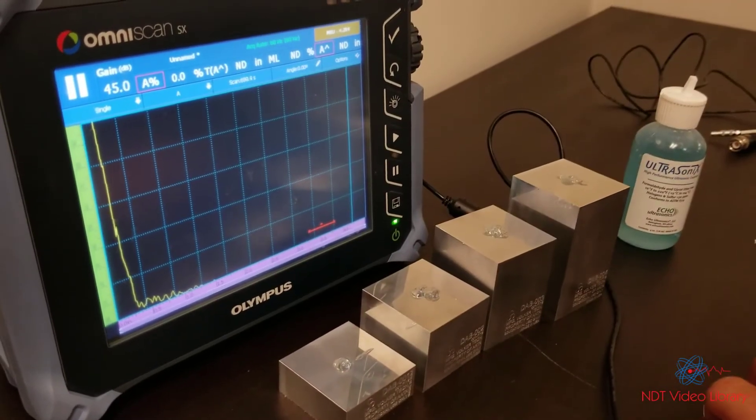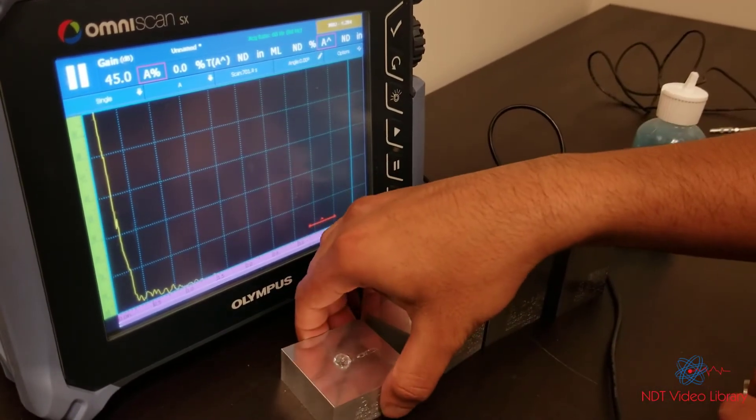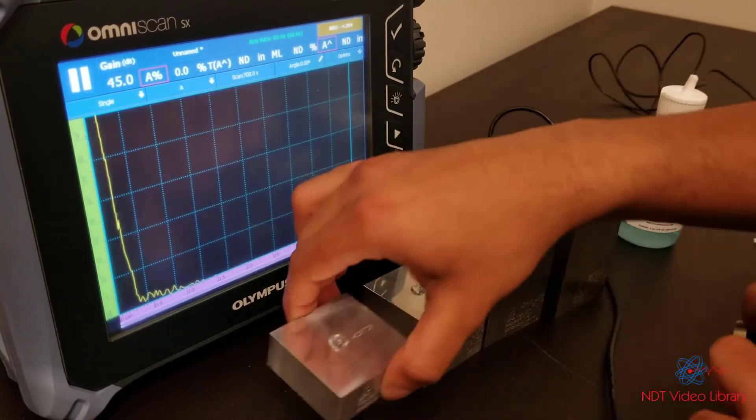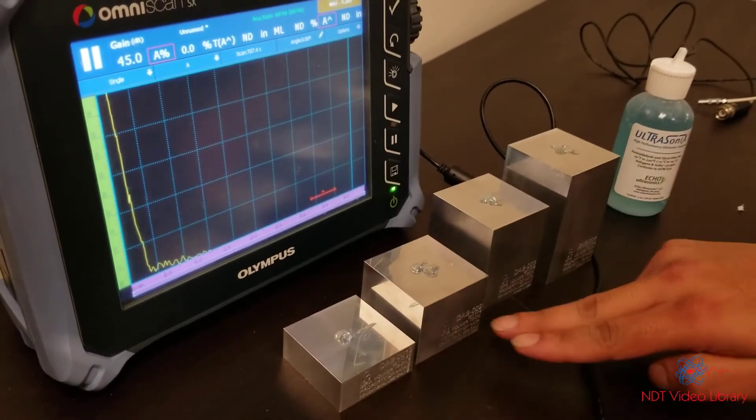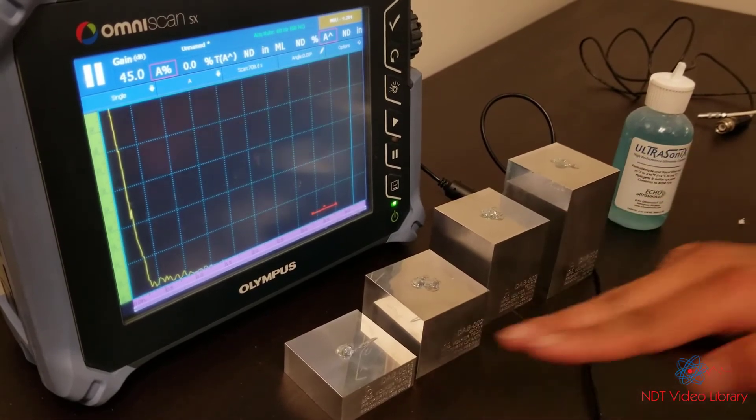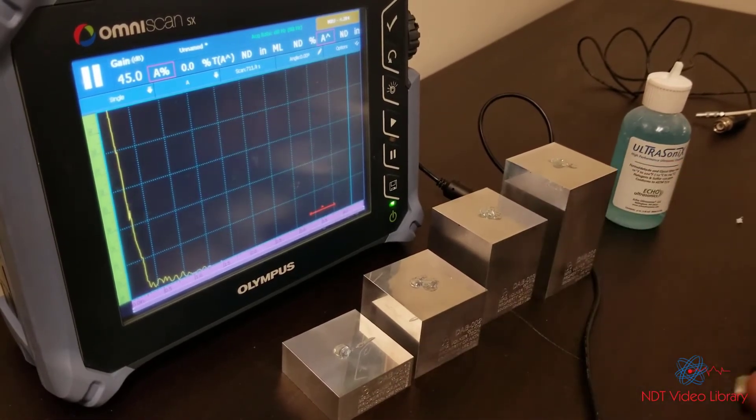These are sets of distance amplitude blocks. What that means is the size of the flat bottom hole stays the same, but the distance of the hole from the top surface keeps increasing from this block to this block.